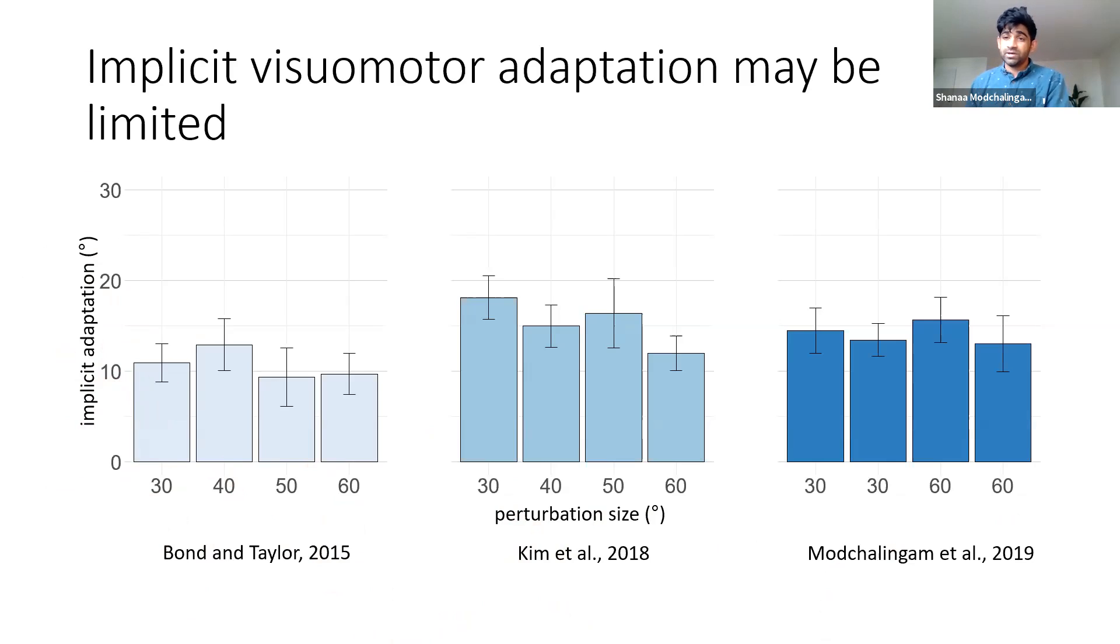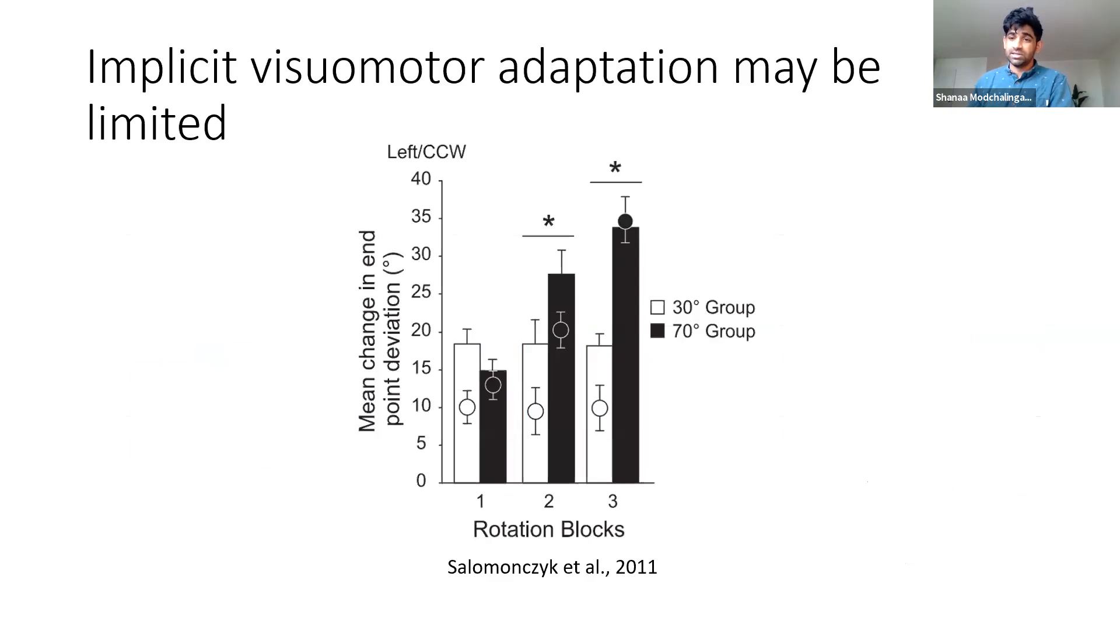Like I mentioned, there are various benefits to implicit adaptation and it would be nice if we can bring this implicit adaptation to a higher level. So has this been done? We do have one previous study from our lab in the past. It's an older study so we didn't really measure implicit adaptation as well as we do now. In two different groups people adapted to a 30 and a 70 degree rotation. The 30 degree rotation group is in white here and the 70 degree rotation group is in black here. We can see that over three blocks the 70 degree rotation group did show higher levels of implicit adaptation going all the way up to like 40 degrees.